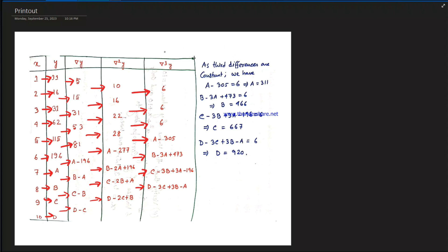So the third order difference is constant. If we add a minus 360 and 6, we will get a minus 360. The third difference being constant is the key condition here.